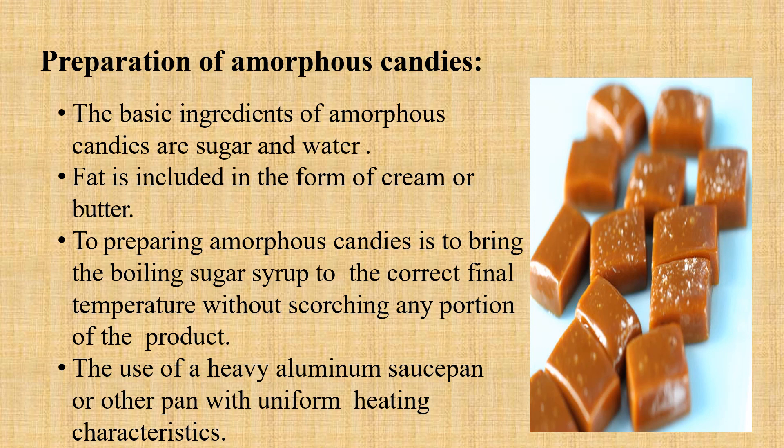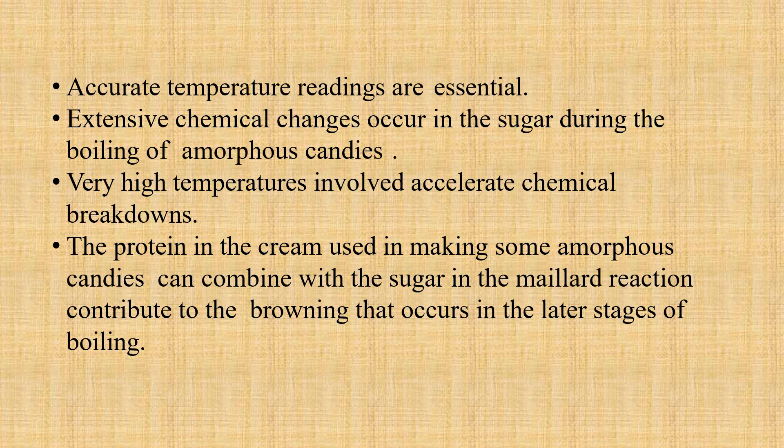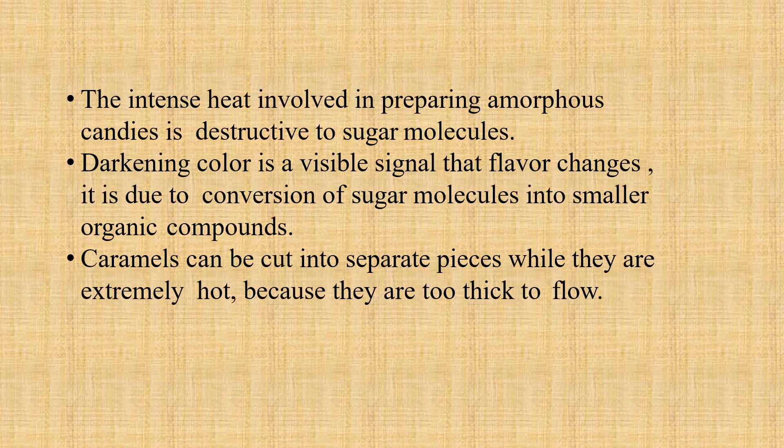The use of a heavy aluminum pan is encouraged and accurate temperature readings are essential. Extensive chemical changes occur in sugar during the boiling of amorphous candies. Very high temperatures accelerate chemical breakdowns. The protein in cream used in making some amorphous candies can combine with sugar in the Maillard reaction, contributing to the browning which occurs in the later stages of boiling. The intense heat is destructive to sugar molecules, and darkening color is a visible signal of flavor changes due to conversion of sugar molecules into smaller organic compounds. Caramels can be cut into separate pieces while extremely hot because they are too thick to flow; once cooled they become very hard to cut.